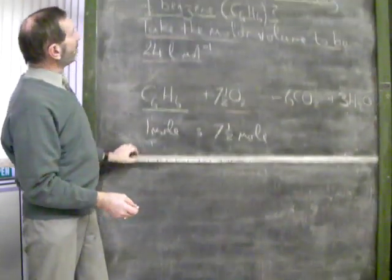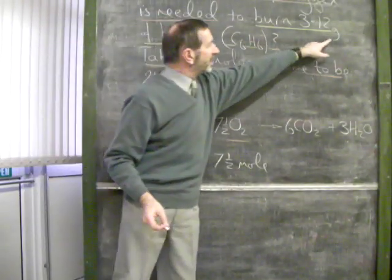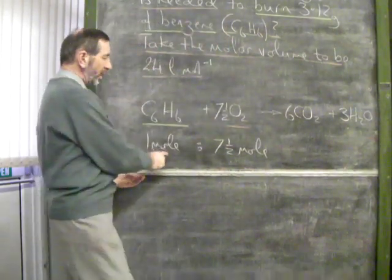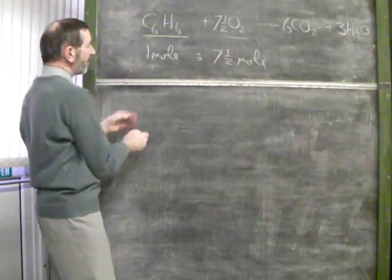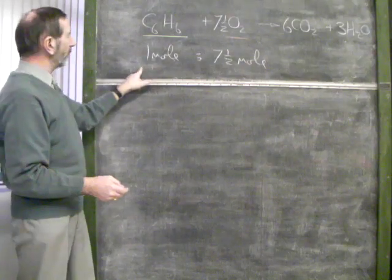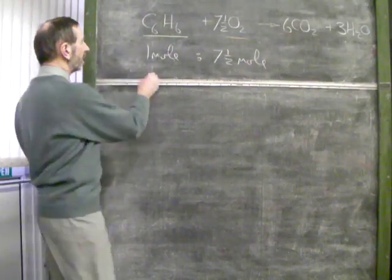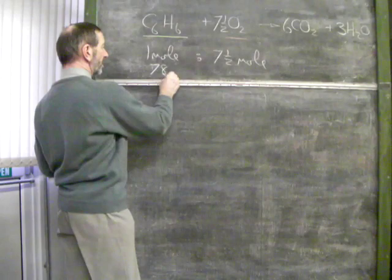The question talks about the benzene in terms of mass, 3.12 grams. So, we're going to define the mole here in terms of mass. What does 1 mole of benzene weigh? 6 carbons and 6 hydrogens comes to 78 grams.